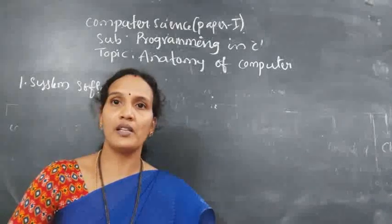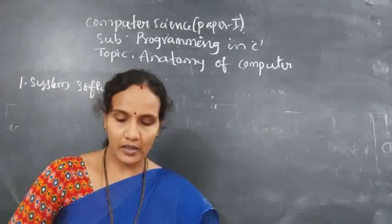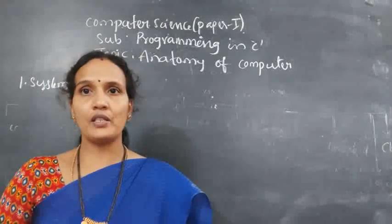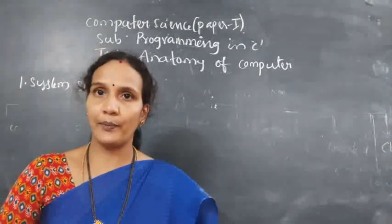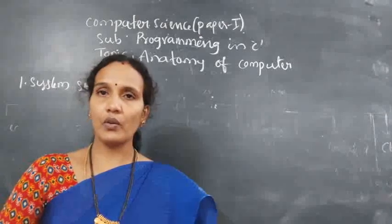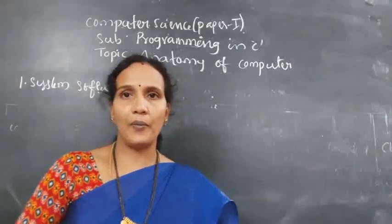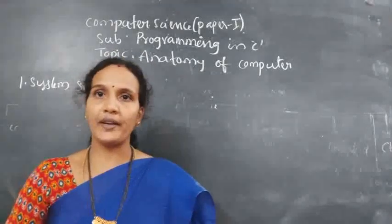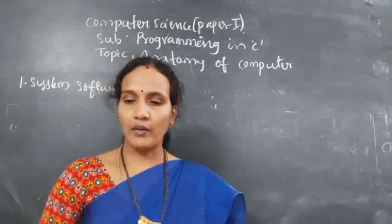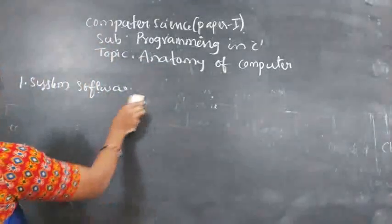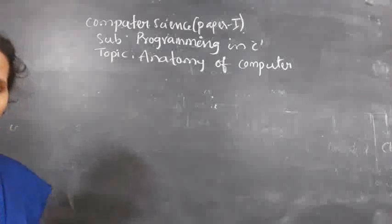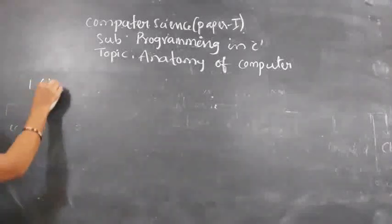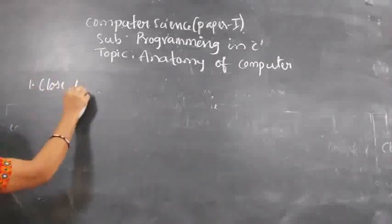System software is also called as an operating system. You can take Windows as an example on a desktop system. These are all operating systems which are mainly designed to run the system, to operate the system. Key points: these are very close to the system and directly interacting with the system.